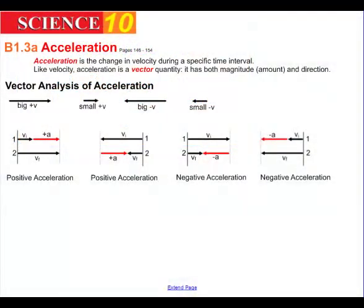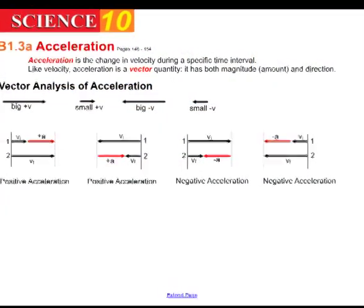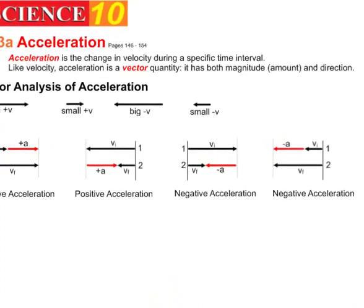Let's move on to acceleration. Acceleration is simply the change in velocity during a specific time interval — that means your velocity is changing within a certain amount of time. Like velocity, acceleration is also a vector. It has a magnitude, a number you can calculate, but it also has a direction. An object has to be accelerated in a certain direction; it can't be accelerated to nowhere.